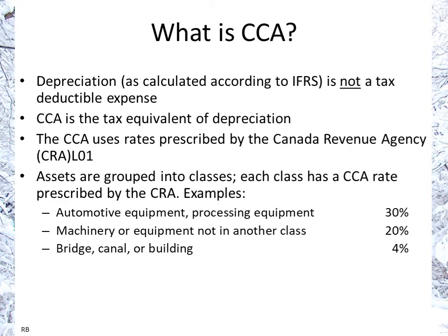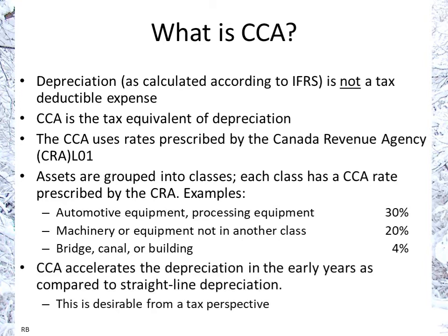The rates are prescribed by the CRA. Examples of asset classes include automotive equipment or processing equipment at 30%, machinery at 20%, and bridges, canals, or buildings at 4%.